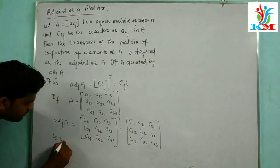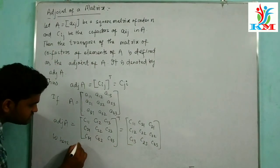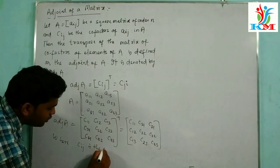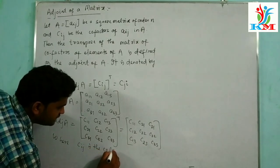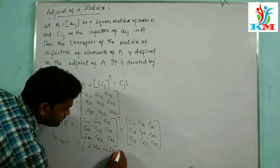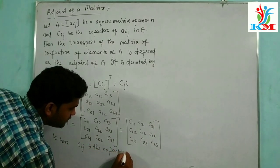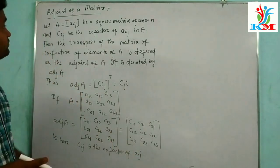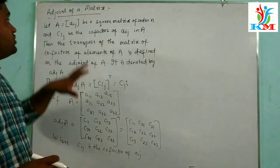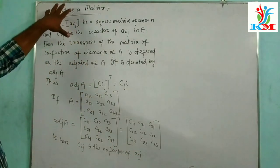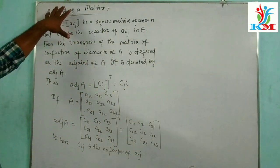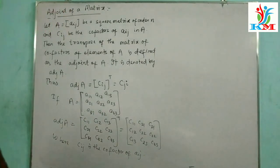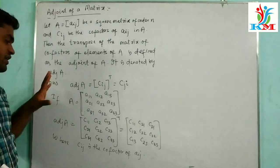Where Cij is the co-factor of the element Aij. That means, the adjoint of the matrix is obtained by transposing the co-factor matrix of A.